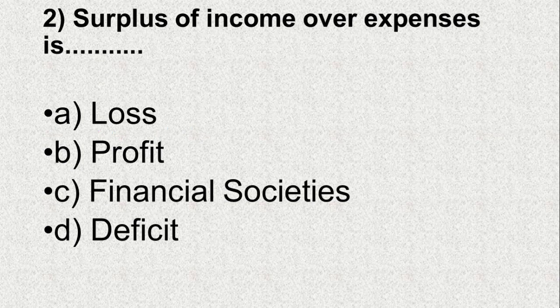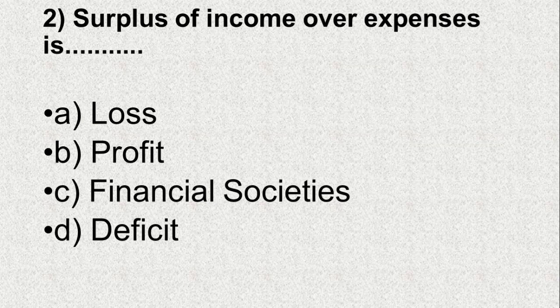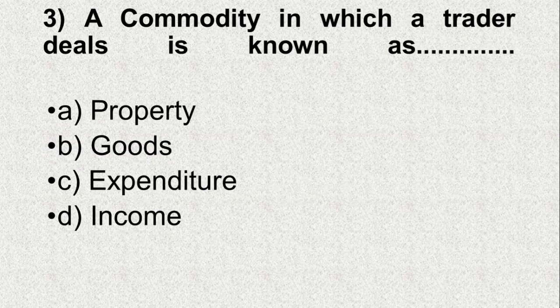Question number 2. Surplus of income over expenses is — Option A: Loss, B: Profit, C: Financial societies, D: Deficiencies. And the correct answer is B, Profit.